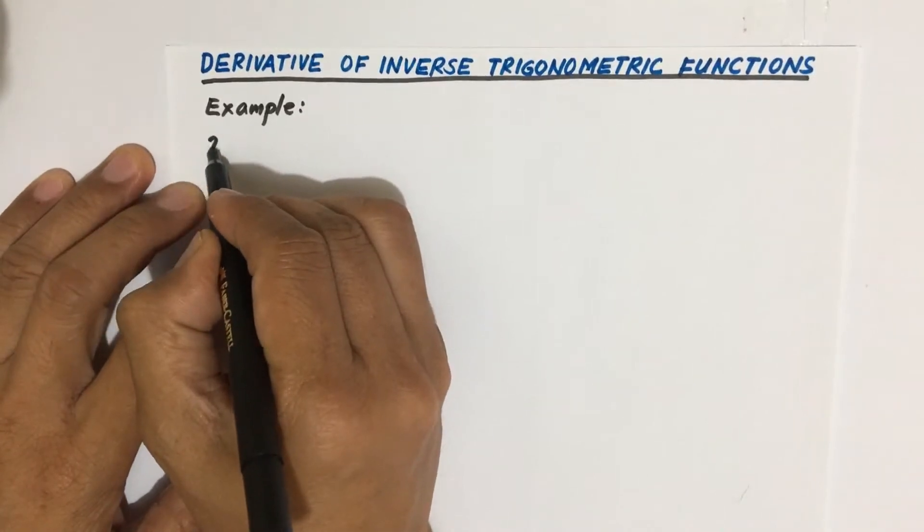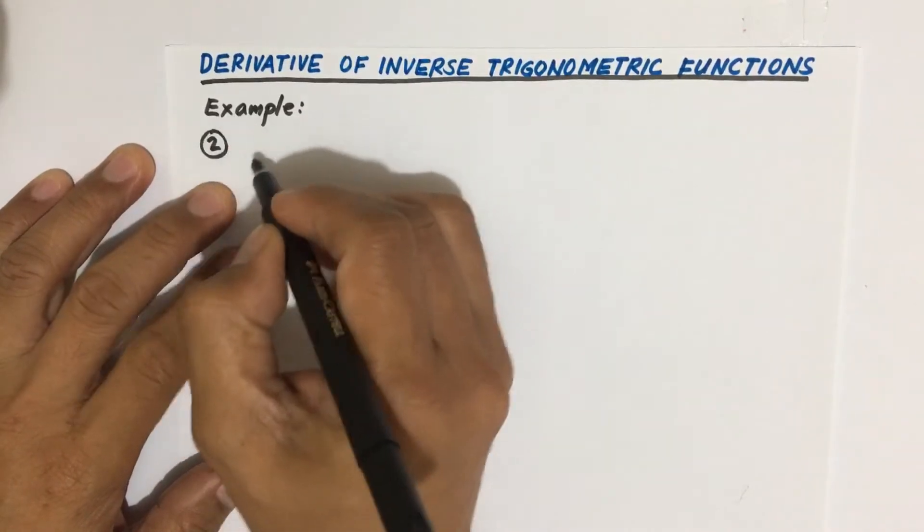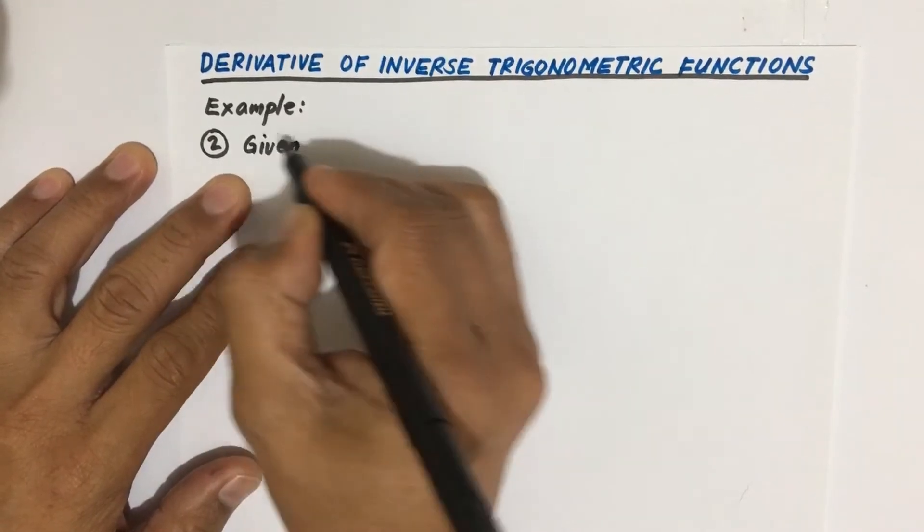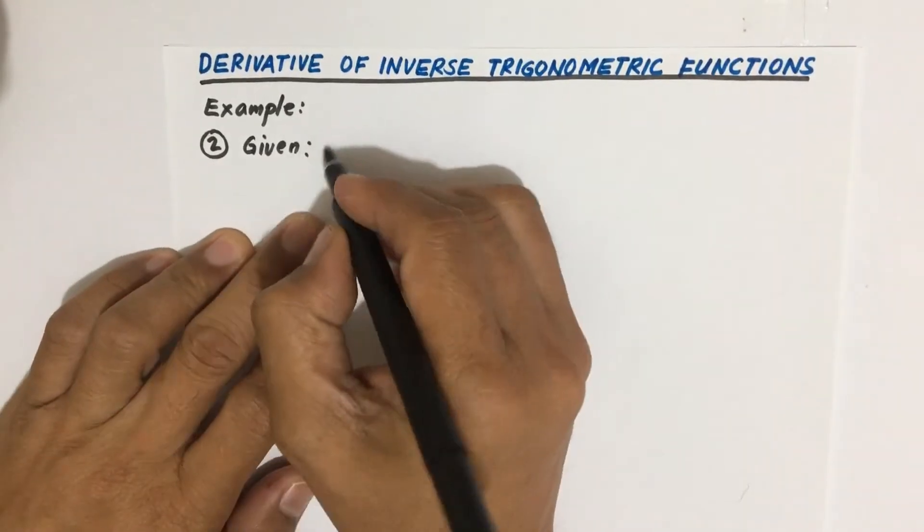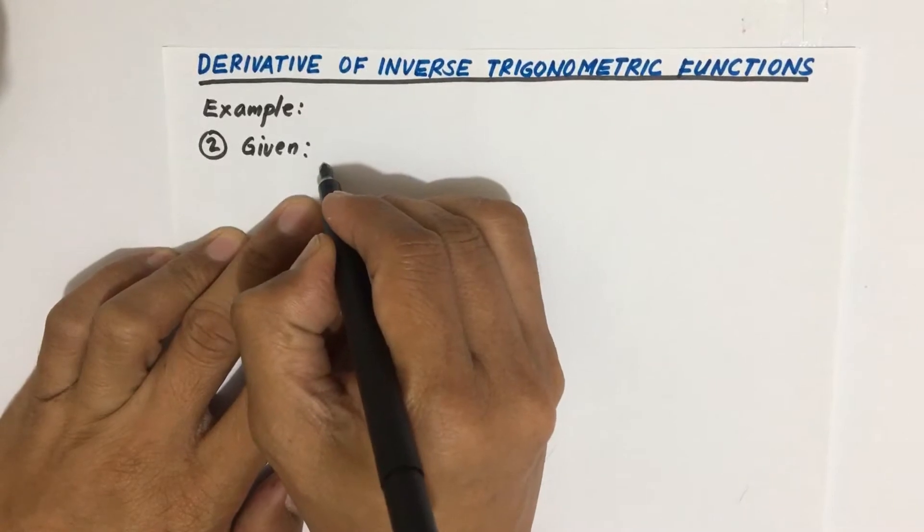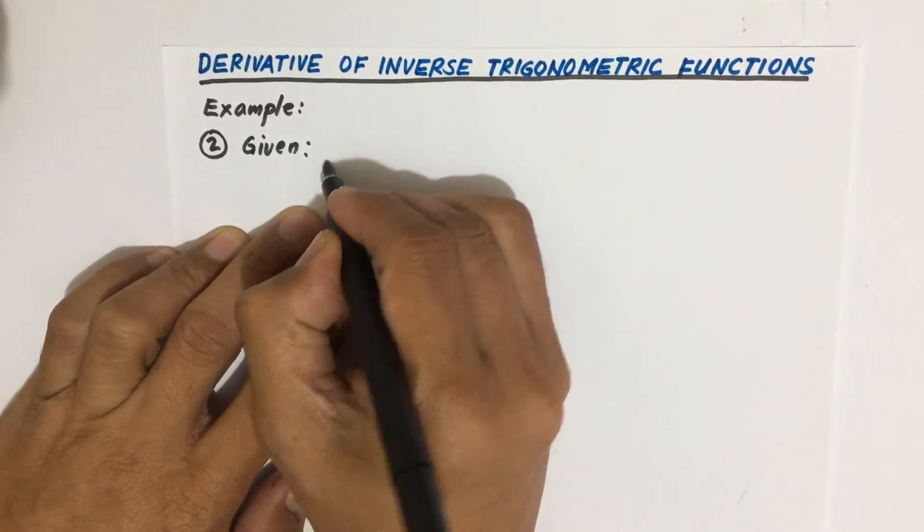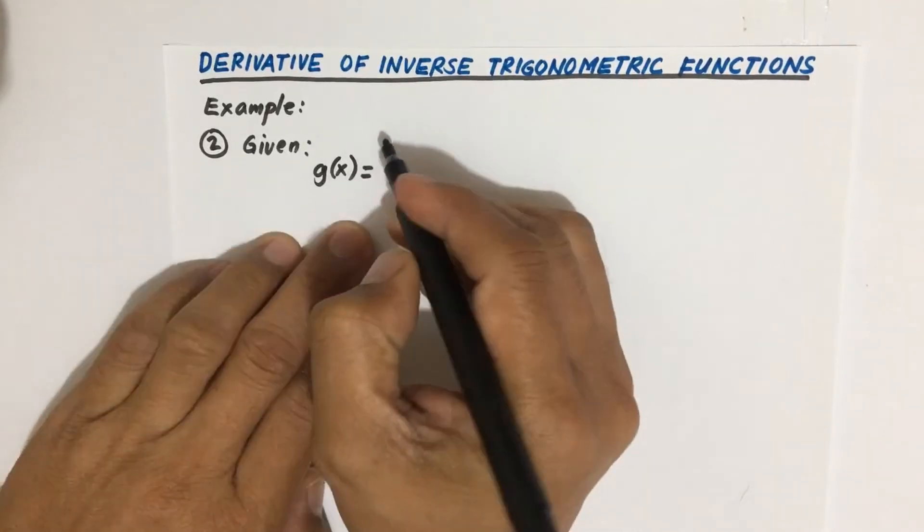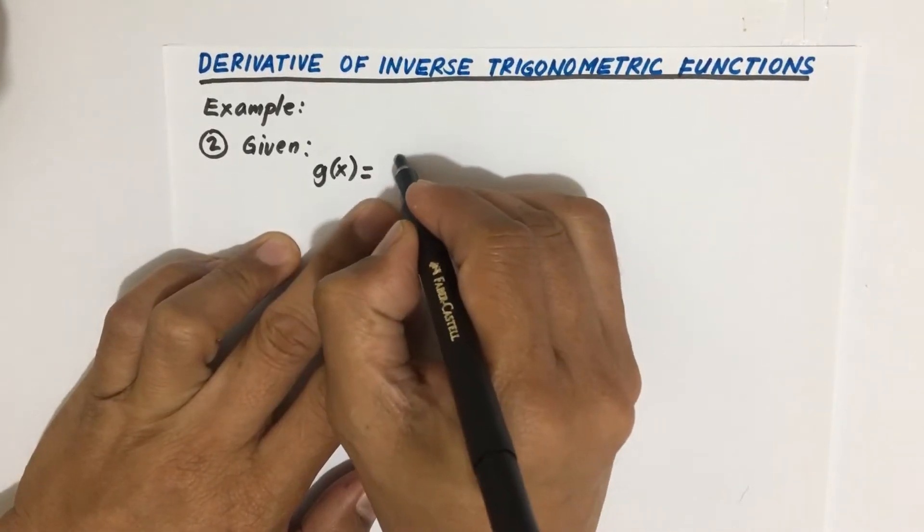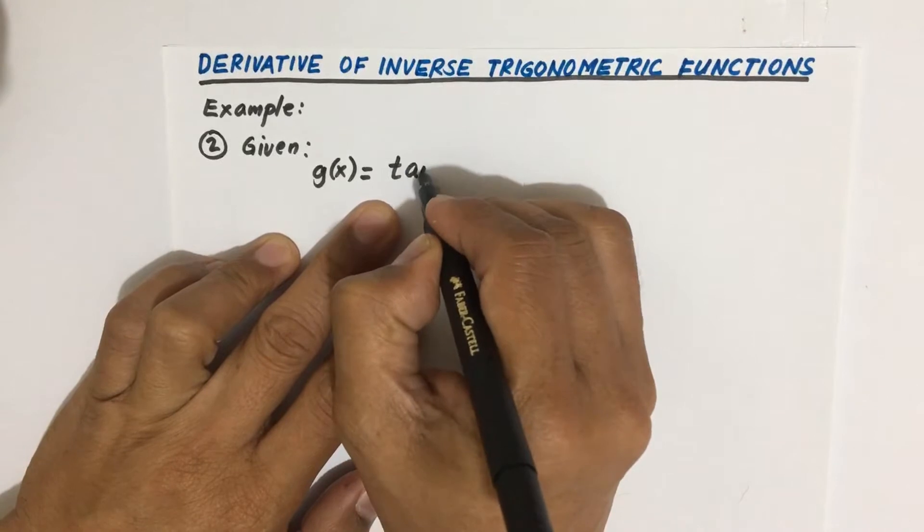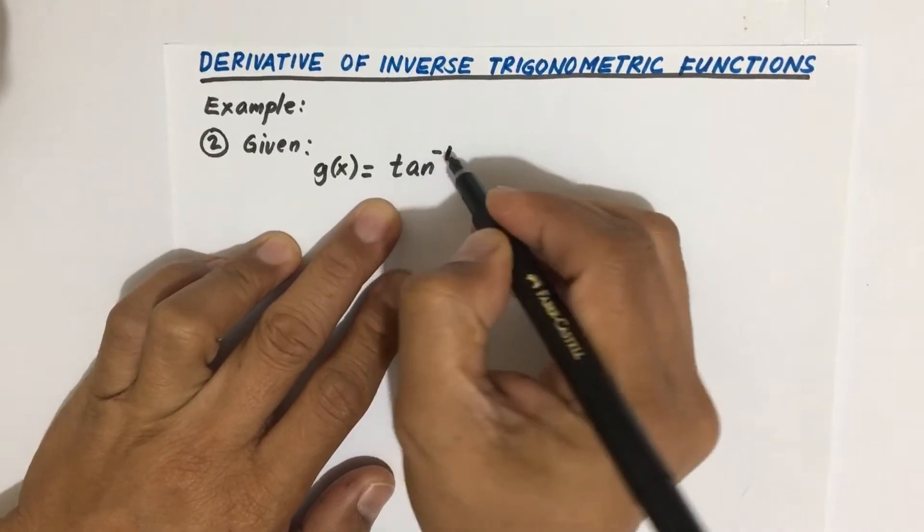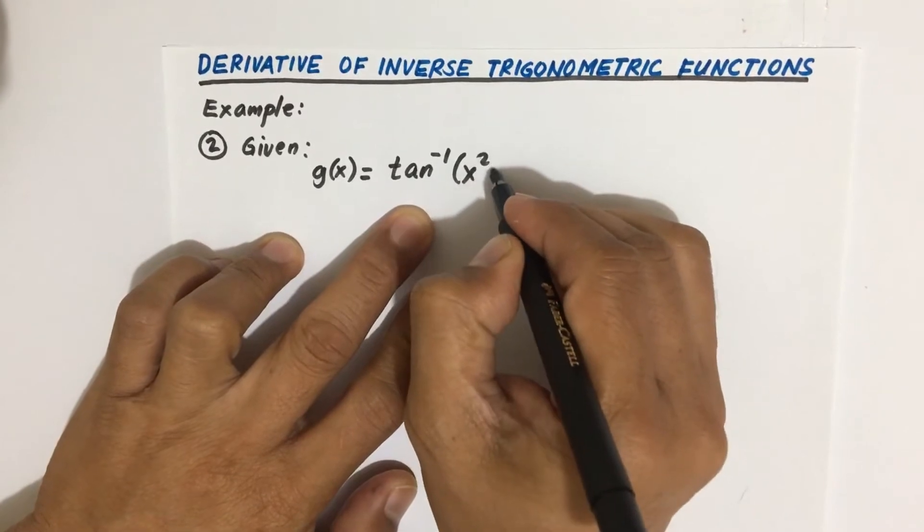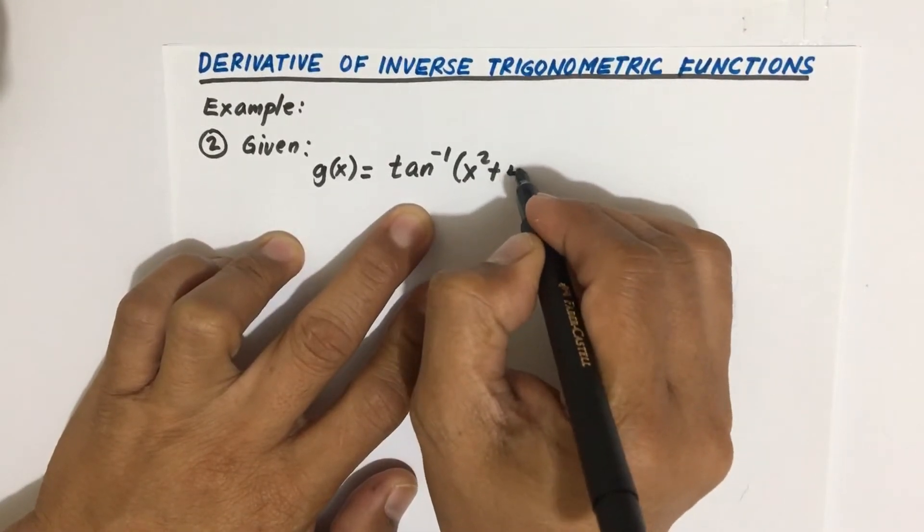So we have example number two. We're given a function of x equal to arc tangent or inverse tangent of x squared plus 4.